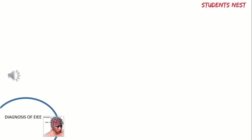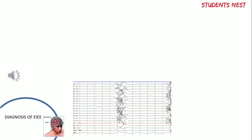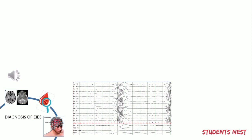Diagnosis can be made with an EEG, done by placing electrodes on the scalp and monitoring the brain's activity. It shows a typical burst-suppression pattern, where bursts of high-amplitude spikes alternate with periods of suppressed electrical activity. Brain imaging can also be done to identify potential structural abnormalities, and blood tests can be performed to look for underlying metabolic and genetic disorders.